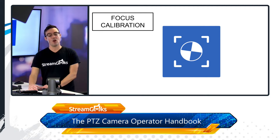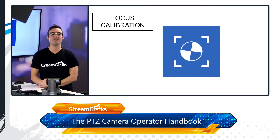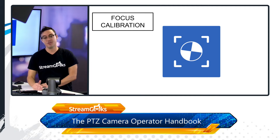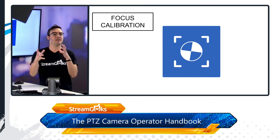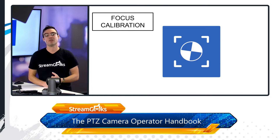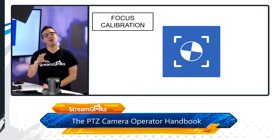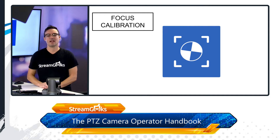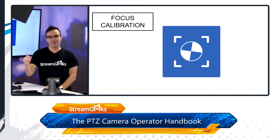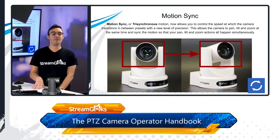Another feature many people don't know about is focus calibration. Focus calibration allows you to calibrate the focus of your PTZ camera. You should probably do it once a year and definitely the first time you set up a PTZ camera, since it's been moved around and taken out of a box. If there's any thought that focus could be improved, use the focus calibration setup tool — it'll recalibrate and make the camera perform better and more optimally.